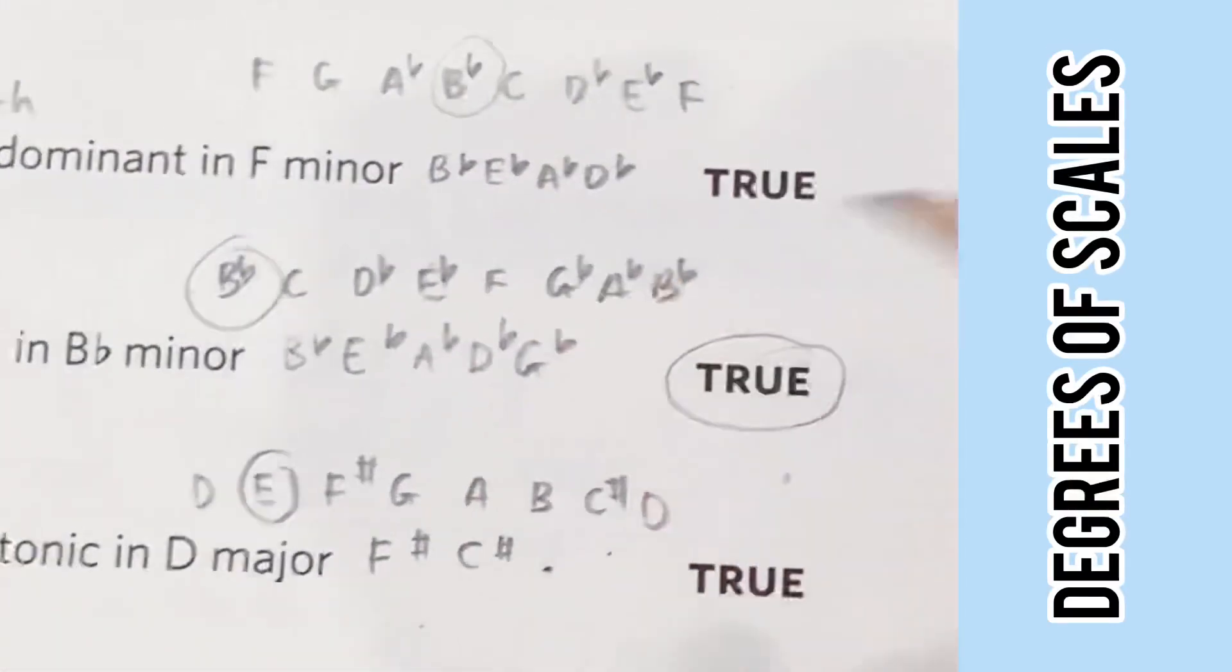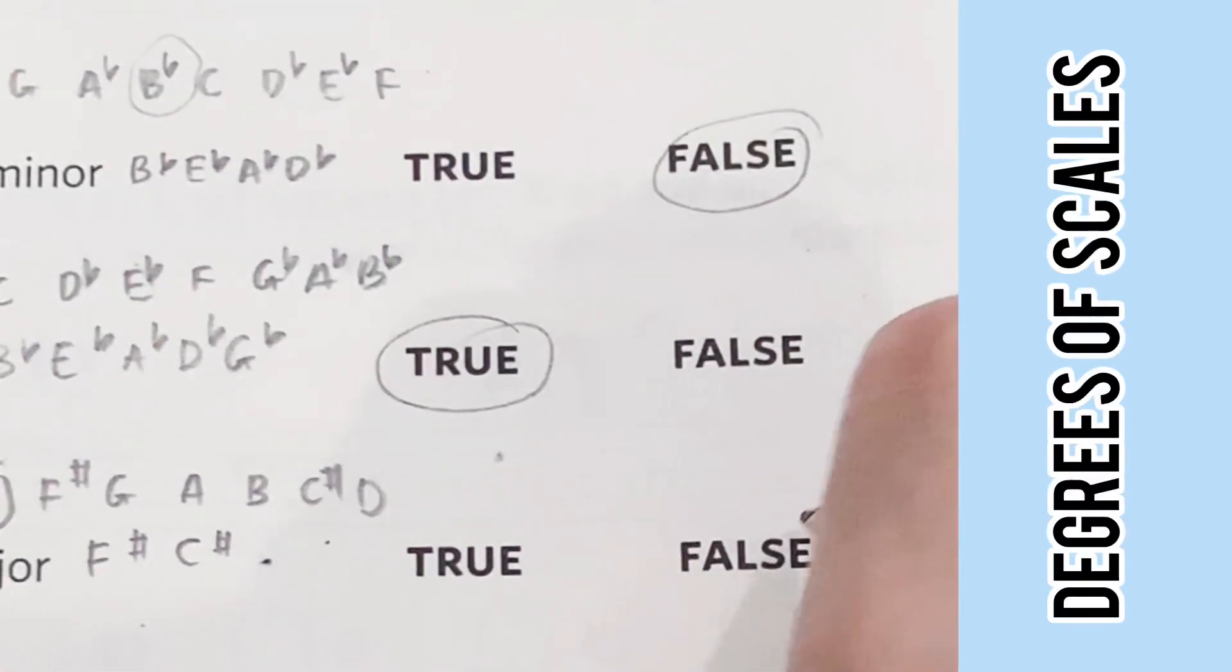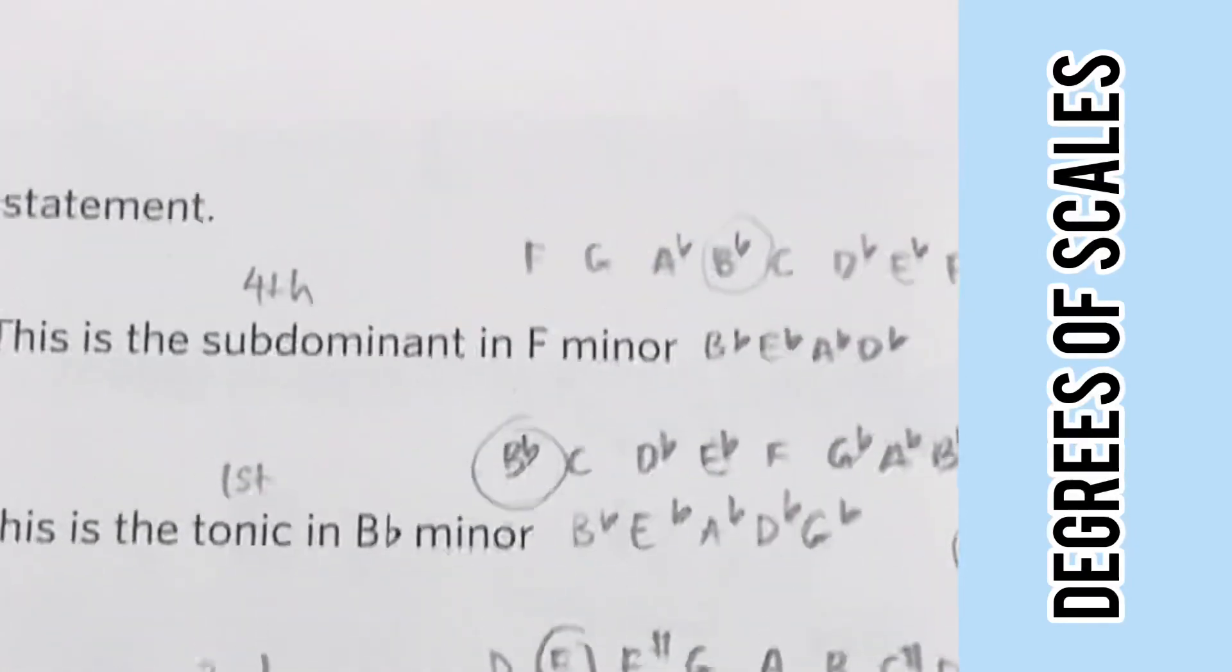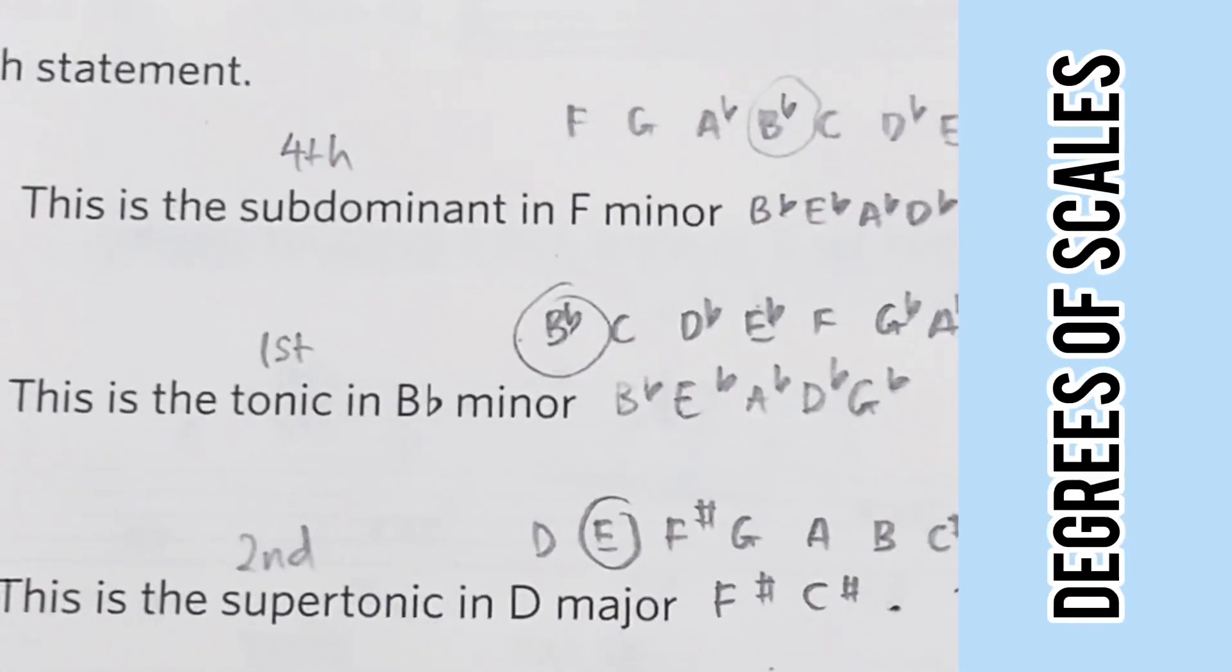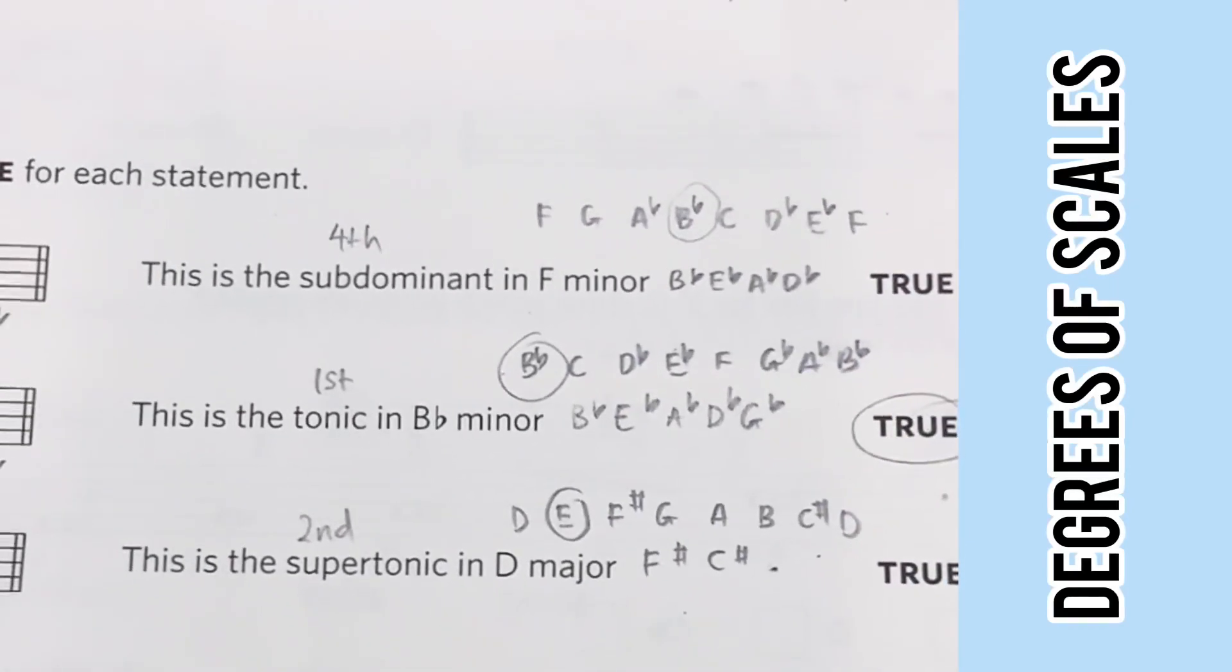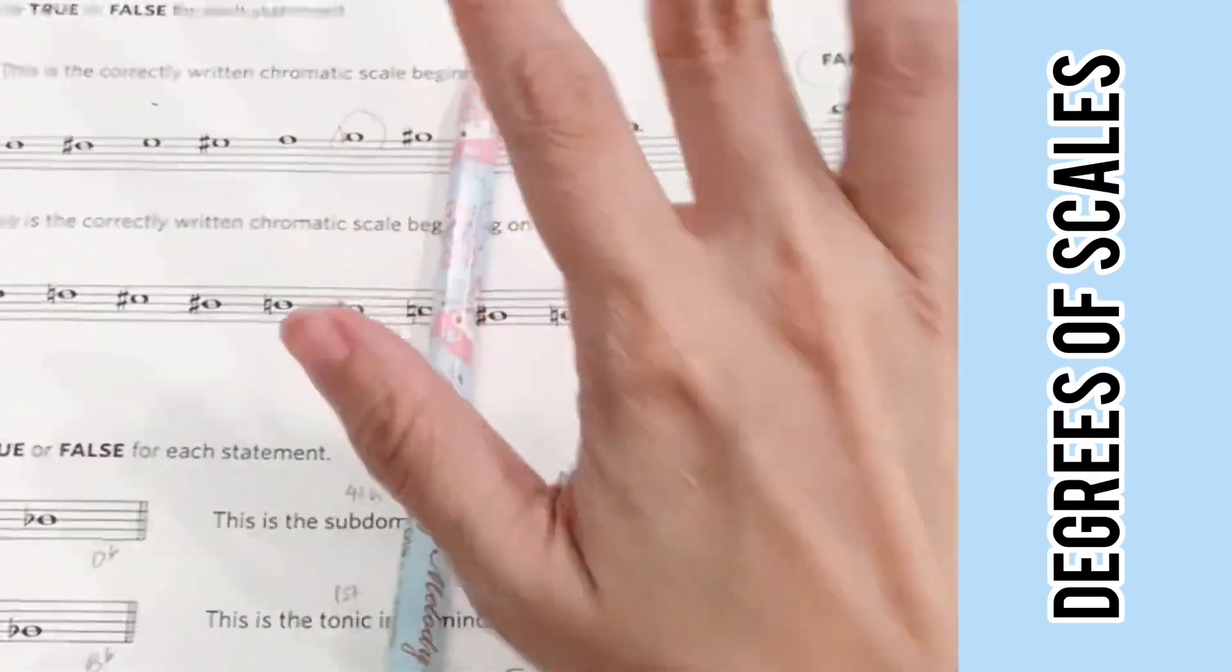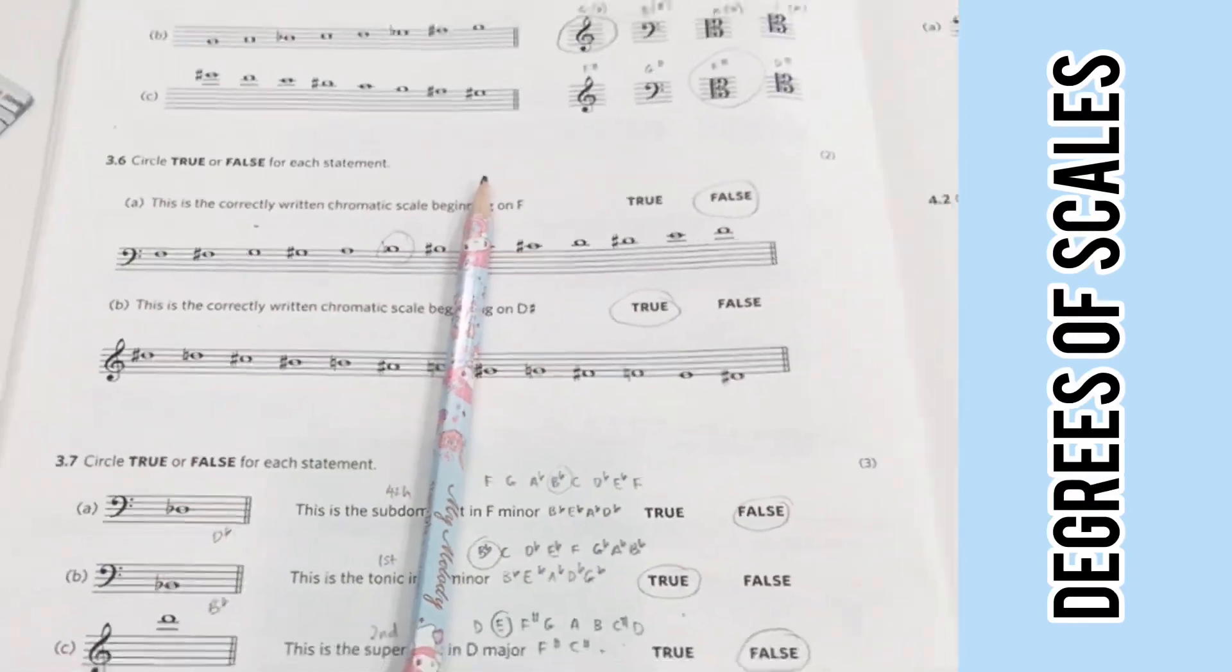The supertonic is E, so the note here is D. And that's all for today's tutorial. Remember, when in doubt, make a list. Thank you so much for paying attention. I'll see you in the next video. Bye bye.